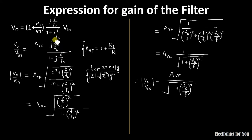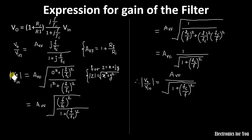This is expressed as a complex number. To represent it in polar form, we find the modulus of V0/Vin. For a complex number Z = X + jY, the modulus is √(X² + Y²). Applying this, the gain magnitude becomes: |V0/Vin| = AVF × √(F/FC)² / √(1 + (F/FC)²), which simplifies to AVF / √(1 + (FC/F)²).